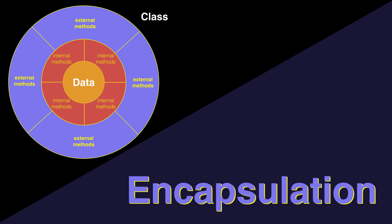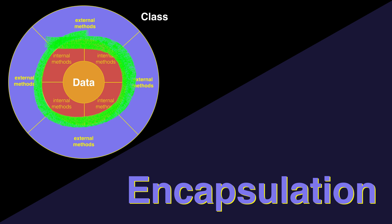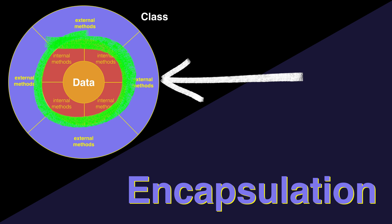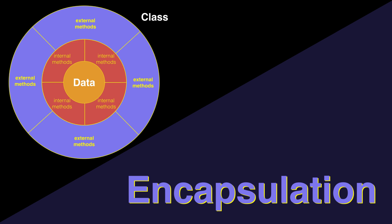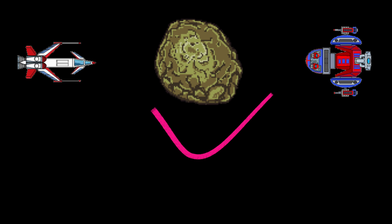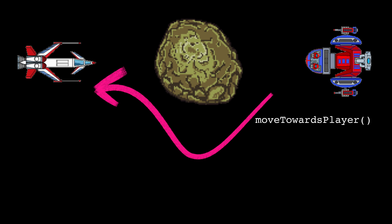Information hiding is pretty much what it sounds like. We are hiding parts of our class from the view of other classes. In this example, you can't get to the internal methods or data without first going through an external method. If you're making a game and you need to move an enemy ship towards the player, you just want to call move towards player.